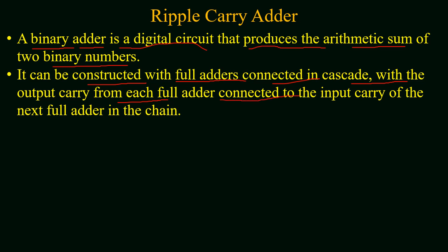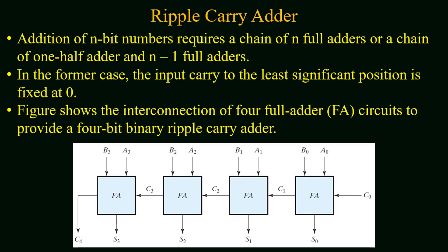For the addition of two n-bit numbers, we require n full adders, where the output carry of each full adder is connected to the input carry of the next higher order full adder. We can say that the addition of n-bit numbers requires a chain of n full adders.